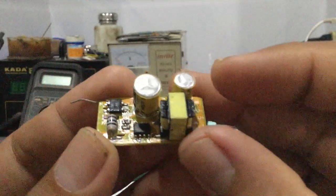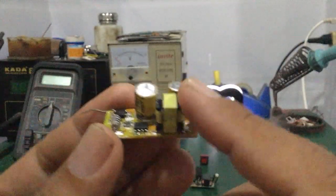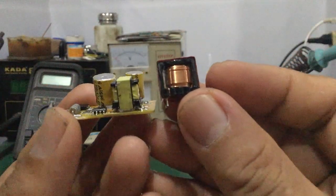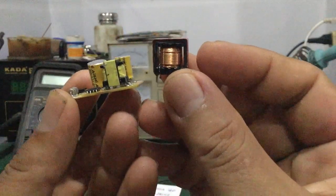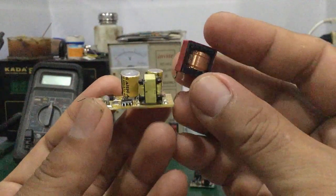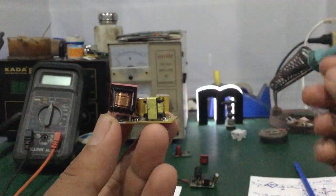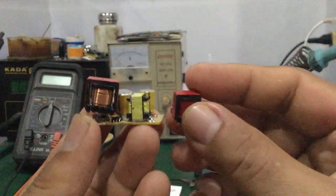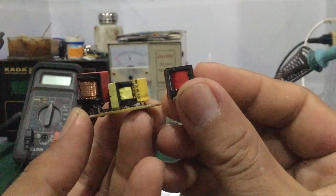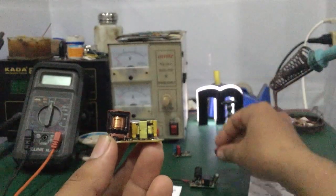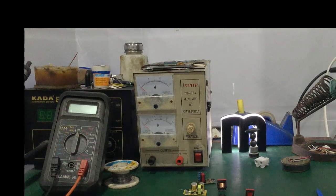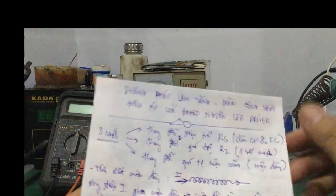Ở đây mình có một cái cuộn dây. Đây là hình dáng của cuộn dây. Khi mà các bạn thay đổi giá trị của cuộn dây này, các bạn sẽ thay đổi được điện áp ngõ ra của nguồn LED driver. Cuộn dây có nhiều kích thước: to, nhỏ, lớn, bé đủ cả. Trước tiên mình sẽ nói sơ qua về tính chất của cuộn dây hoặc cuộn cảm.